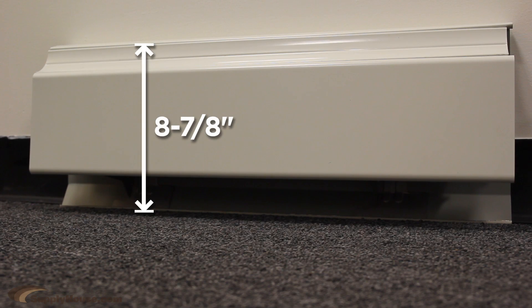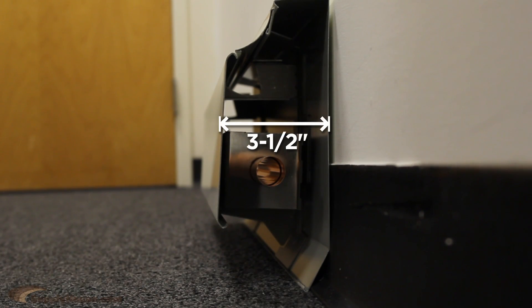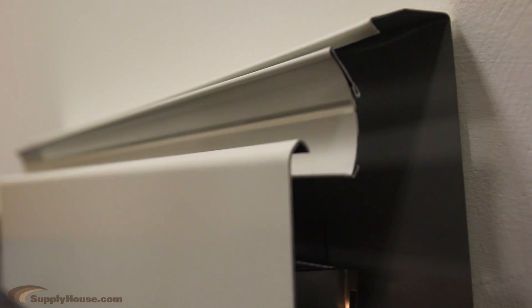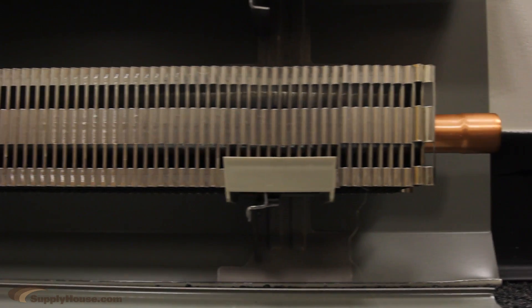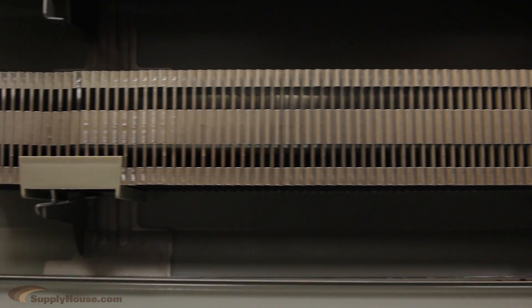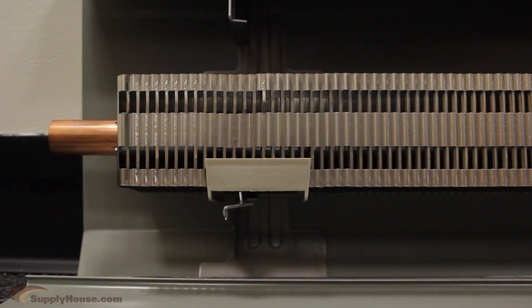The Multipack 80 has an overall height of 8 and 7/8th inches, and an overall depth of 3 and a half inches, with BTU outputs ranging up to 1,030 per foot. The Multipack 80 also offers several different element options for greater pipe sizes, different pipe materials, and different BTU outputs.